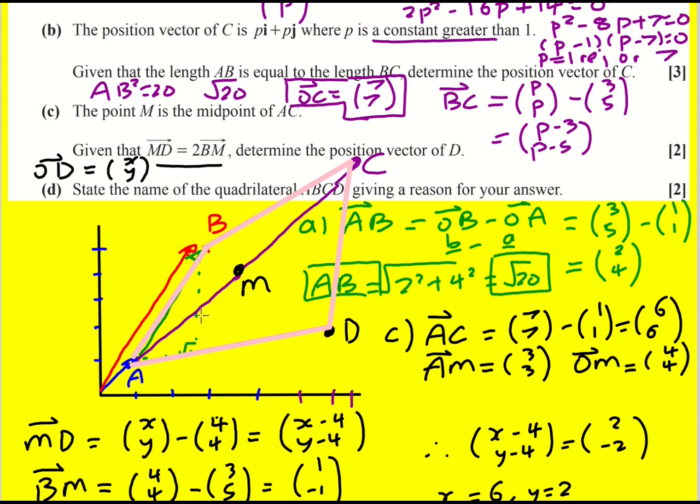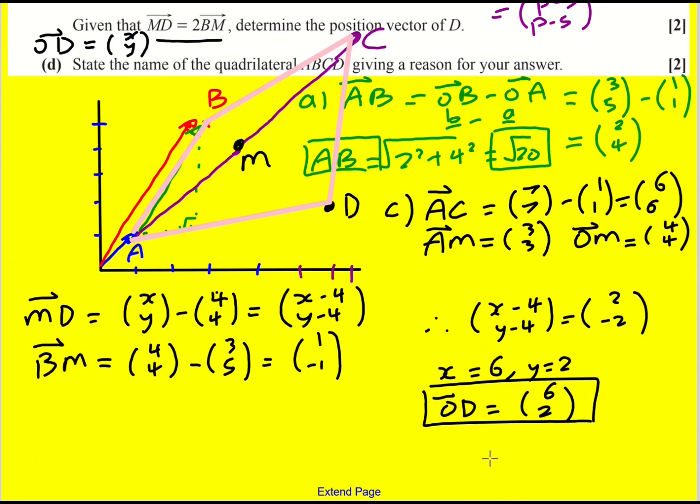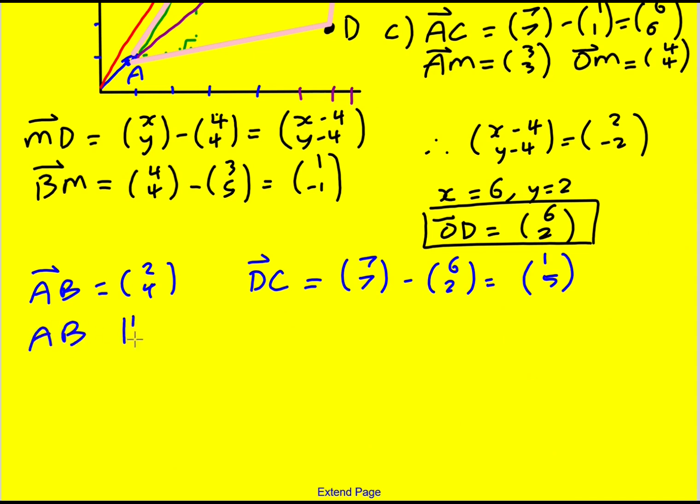And what I decided to do is I worked out what... Well, we had AB from the start. Where was it gone? 2, 4. So I decided to find out CD to see if they were parallel. That seemed to be a good idea. Actually, DC, because then it'll be exactly like they're going in the same direction. So DC is going to be OC, which remember was 7, 7, minus 6, 2. So that gives me 1, 5. And so, yeah, not parallel. AB is not parallel to DC, which means it's not a parallelogram and therefore not also a rhombus.